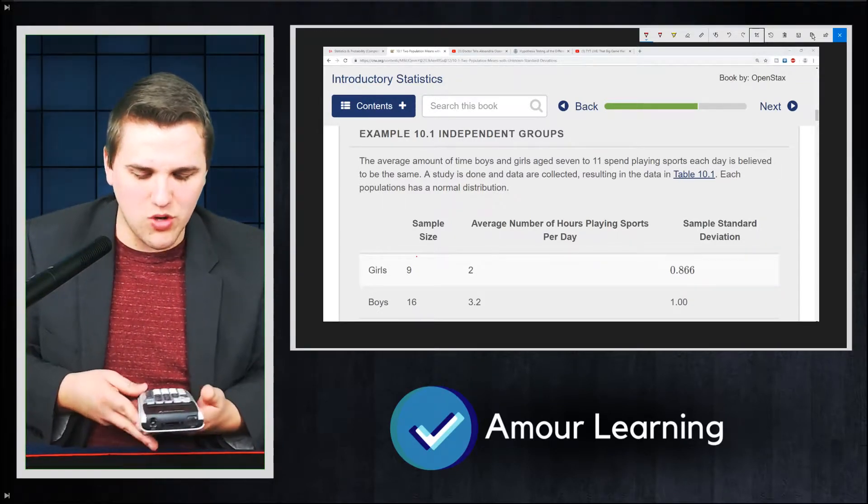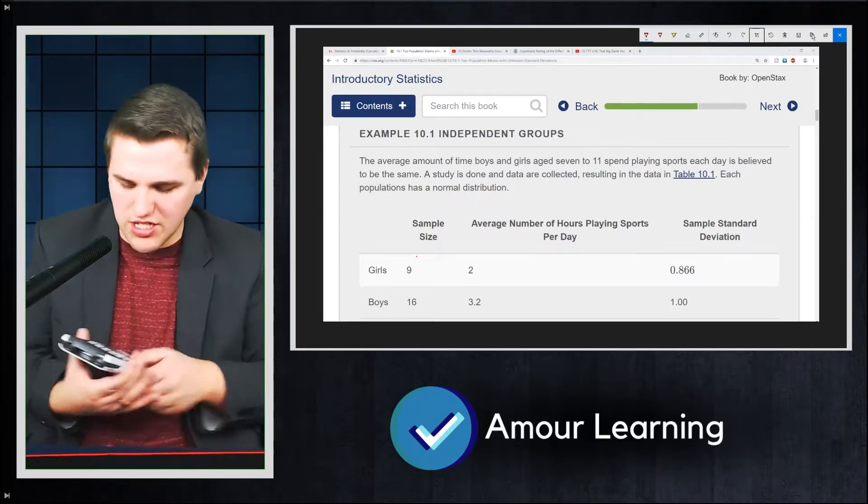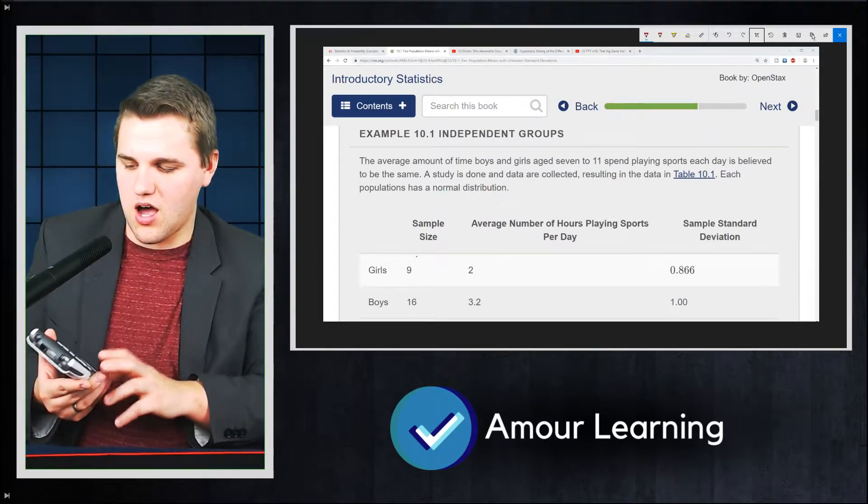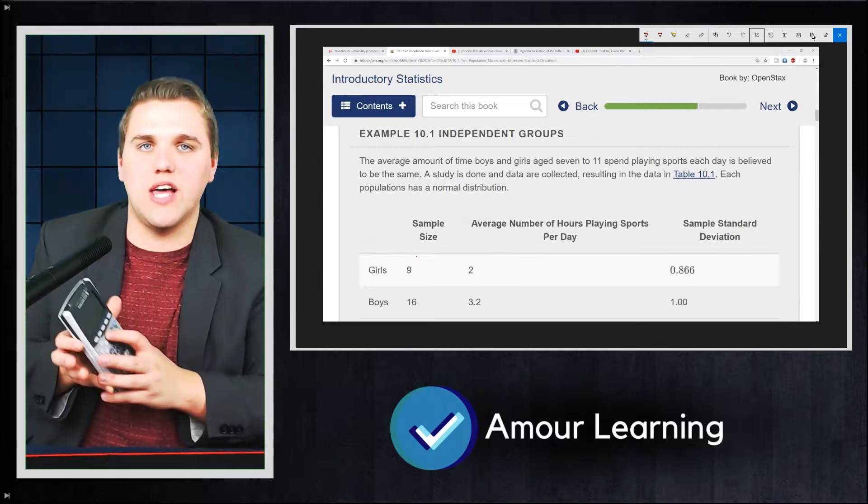Now how can we use our calculator to do this? Well let me teach you guys. You go to stats. If you go to edit, you'll see the two lists.